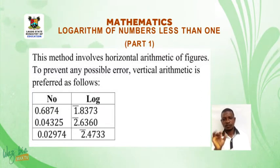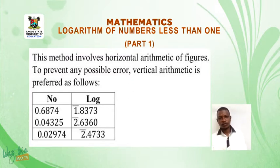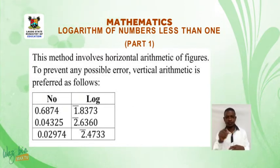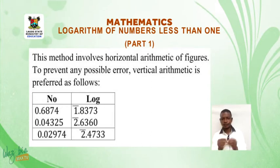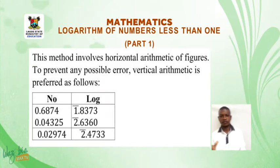Now, number and log: 0.6874 gives us the value bar 1.8373 from the log table. Also, 0.04325 gives us the value from the log table as bar 2.6360. Since the operation between the two numbers is multiplication, then we add their log values. Adding the two together, we have bar 2.4733.